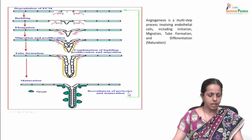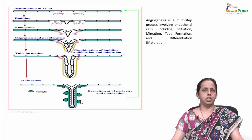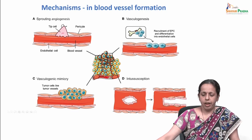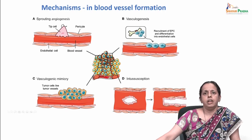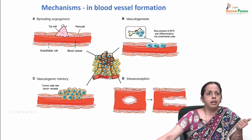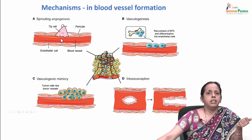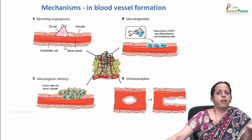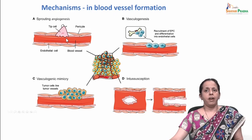This leads to invasion of the matrix, EC proliferation, and formation of strings of new endothelial cells that organize into hollow tubes, forming new networks of blood vessels — vasculogenesis. There is recruitment of pericytes and further maturation and differentiation. In the mechanisms of blood vessel formation, you have sprouting angiogenesis. There is also less frequent neovascularization from bone marrow-derived endothelial progenitor cells and vasculogenic mimicry. Sprouting angiogenesis is a well-known angiogenesis-promoting mechanism adapted by tumor cells to induce their own vascularization from pre-existing host capillaries, using ECM, soluble factors, and well-defined steps.